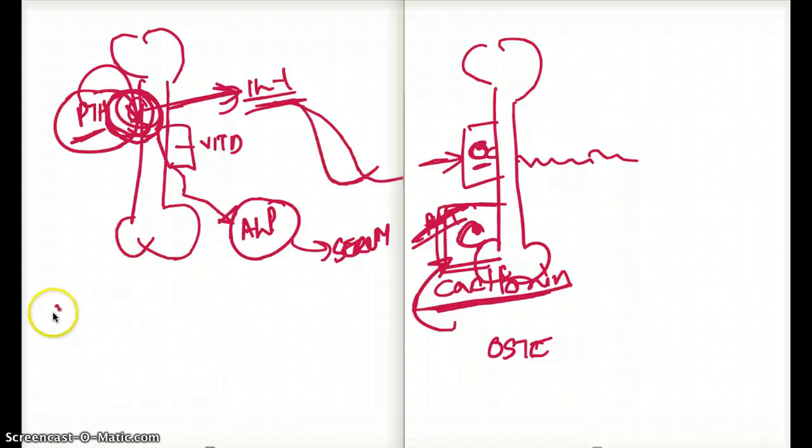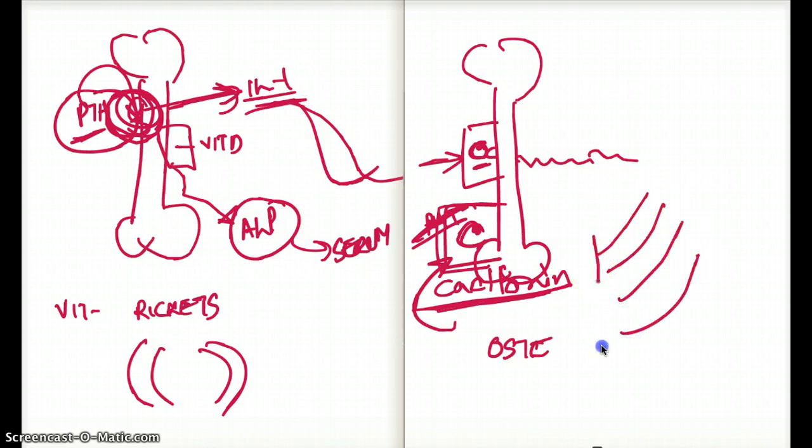Vitamin D deficiency causes rickets in children. They have bowing of legs because the bones are soft. They're also going to have ricketic rosary. That means on their vertebra, where the vertebra meets the sternum, there is going to be beading. Because the bone and the cartilage is going to expand a little bit. They're softer and they're not mineralized. It's called ricketic rosary and it's quite visible. Even if you lift up a boy's shirt or a girl's shirt, when they're a little boy and girl, you can see that there is beading along the vertebra.